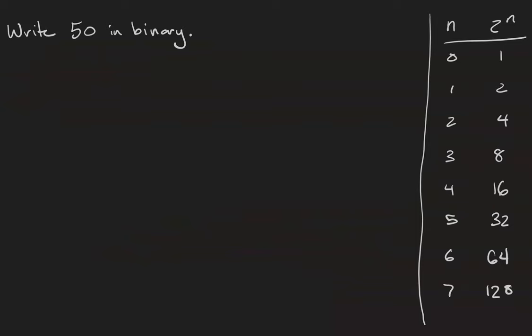Let's see an example. We're going to write the number 50 in binary. Notice that to the right of the screen is a bunch of powers of 2, the 0th power of 2, which is 1, up through the 7th power of 2, which is 128. Much more than we need for this example. Observe that the highest power of 2 that is less than or equal to 50 is the number 32.